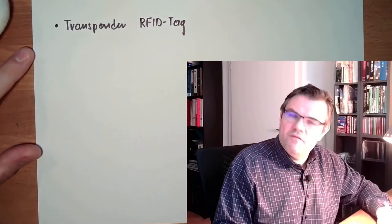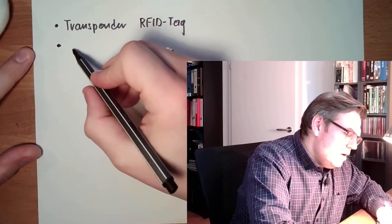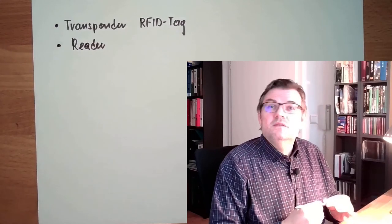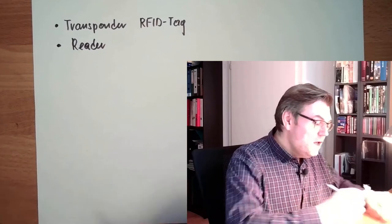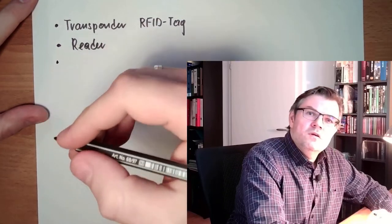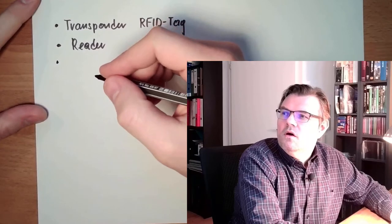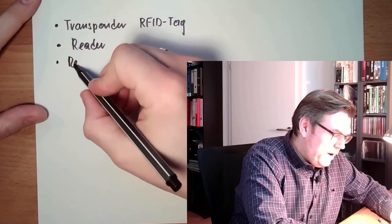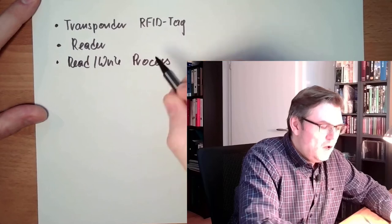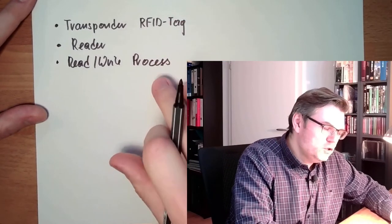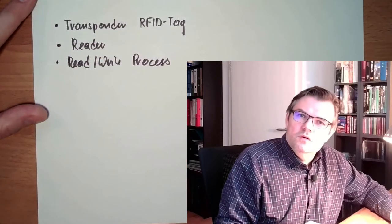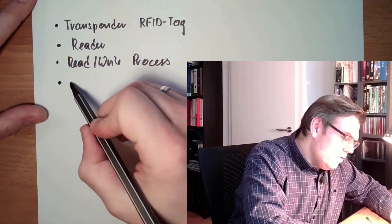Every RFID system has an RFID tag and then, of course, a reader. Every transponder has an RFID reader, because otherwise it would not work. That's obvious. And of course, every transponder needs or every system has a certain flow or a certain process and how to get out the information or put in information into the RFID tag with the reader. This is describing somehow the function or the logic between those two. It's also mandatory, of course.